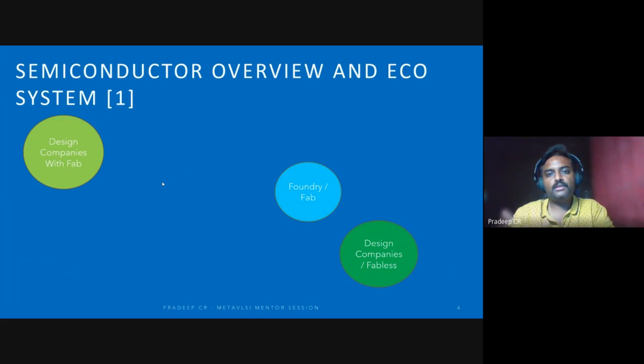They are letting third party companies also come and use their foundries, because they have put in a lot of money to set up foundries - especially 10 nanometer, 5 nanometer, or now 3 nanometer. So they are letting others also explore their foundries. These are the different ones - with fab, without fab, and only fab.